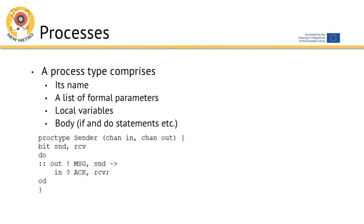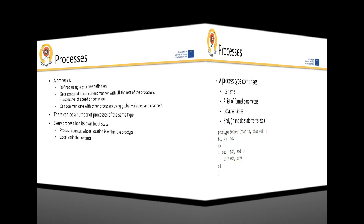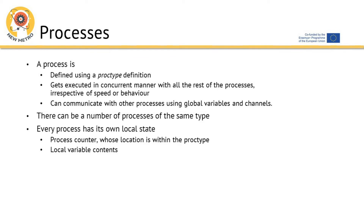A process type comprises its name, a list of formal parameters, local variables, and a body with if-induced statements, etc. A process is defined using a proc type definition. It gets executed in concurrent manner with all the rest of the processes, irrespective of speed or behavior. It can communicate with other processes using global variables and channels. There can be a number of processes of the same type. Every process has its own local state, process counter whose location is within the proc type, and local variable contents.